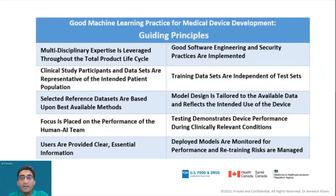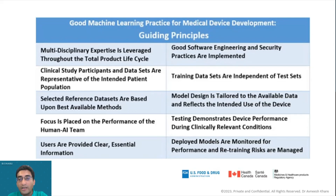These are some good machine learning practice principles — guiding principles for medical device development — which the EU and FDA have come up with. Some important points are that the focus should be placed on performance of human-AI interaction, where AI and humans complement each other. Also, the training dataset should be independent of test sets. These principles help in reducing bias, improving quality, and addressing many ethical issues surrounding AI devices. When working with an AI medical device company, you can ensure these guiding principles are followed to help develop a good AI model.